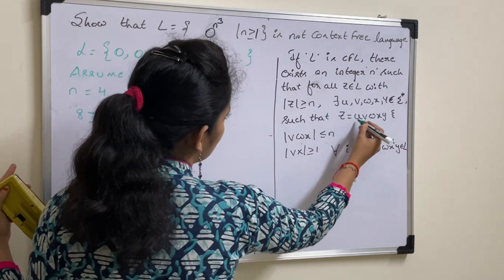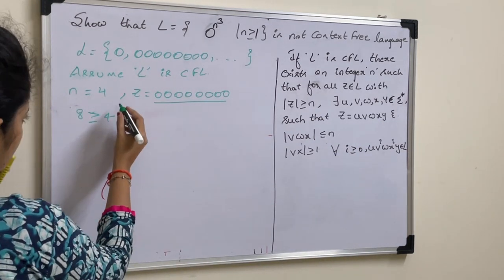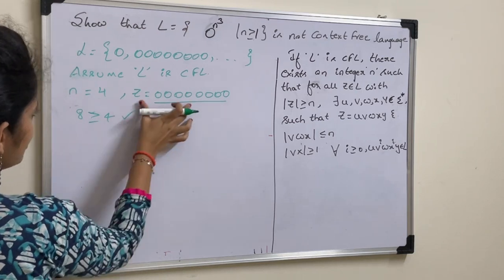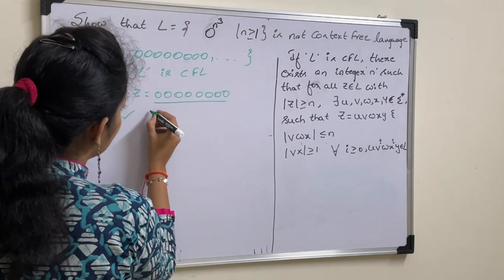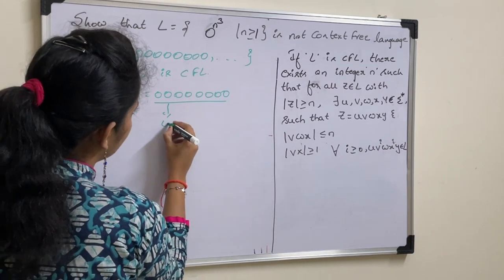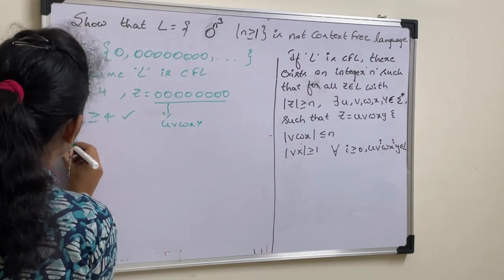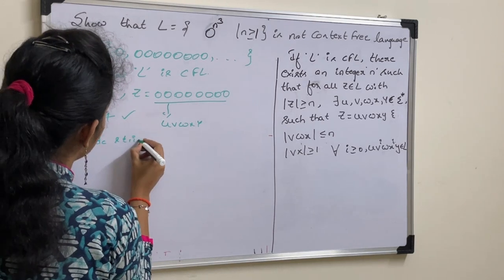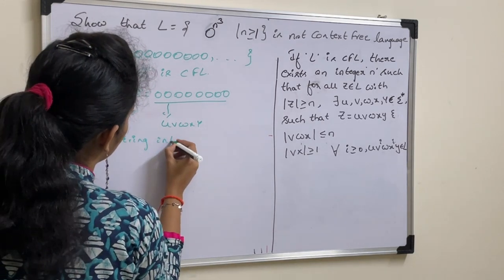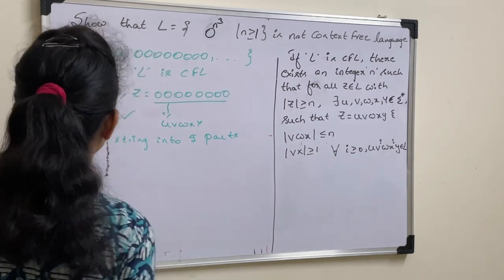Such that z equal to u, v, w, x, y. Now we need to divide the string into 5 parts. This z should be equal to u, v, w, x, y. So, divide the string into 5 parts.